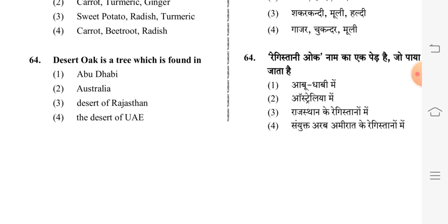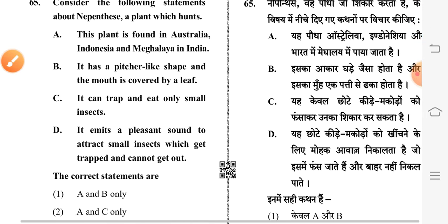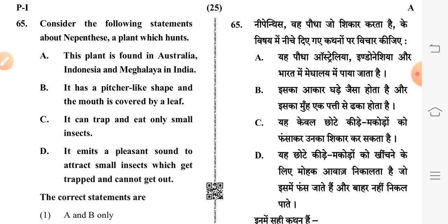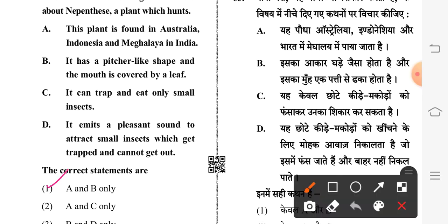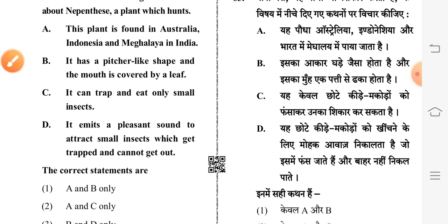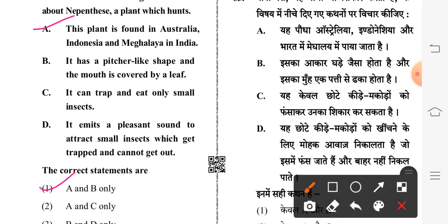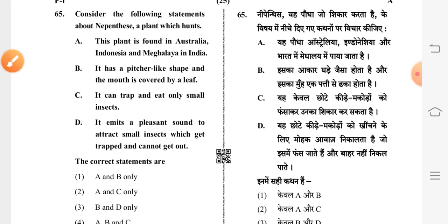Question 65: consider the following statements about Nepenthes, a plant which hunts. Options A and B are correct — first option is correct. This plant is found in Australia, Indonesia, Malaysia, and Meghalaya in India. It has a pitcher-like shape and the mouth is covered by a leaf.